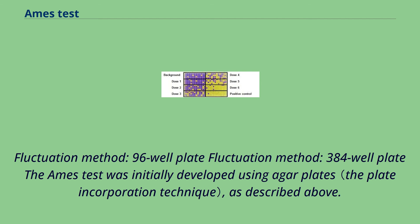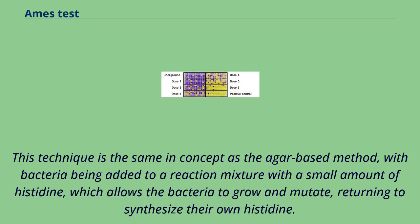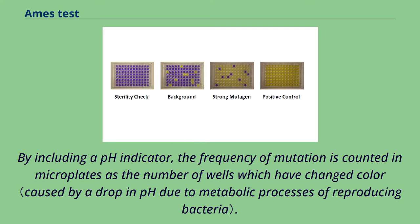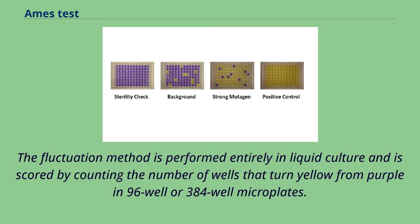An alternative to performing the Ames test has been developed known as the fluctuation method, using 96-well plate or 384-well plate formats. The Ames test was initially developed using agar plates, but this technique is the same in concept: bacteria are added to a reaction mixture with a small amount of histidine, which allows the bacteria to grow and mutate, returning to synthesize their own histidine. By including a pH indicator, the frequency of mutation is counted in microplates as the number of wells which have changed color. As with the traditional Ames test, the sample is compared to the natural background rate of reverse mutation in order to establish the genotoxicity of a substance. The fluctuation method is performed entirely in liquid culture and is scored by counting the number of wells that turn yellow from purple in 96-well or 384-well microplates.